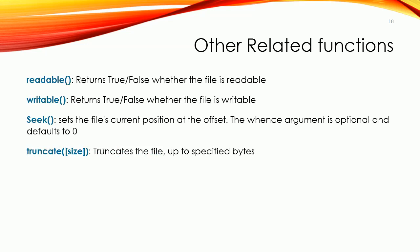Let's talk further about other related methods. readable() returns True if the file was opened for reading, depending on the access mode chosen. writable() is similar — it returns True if the file was opened for writing. The seek() function takes the current position to the specified offset you give; if you do not give any number, the default is 0, so seek() automatically takes you to the beginning of the file. truncate() is a new function — it will cut your file to the size that you specify.